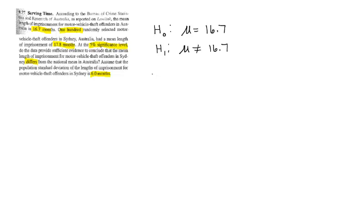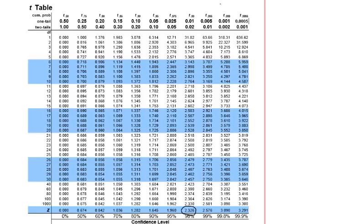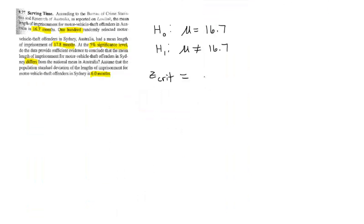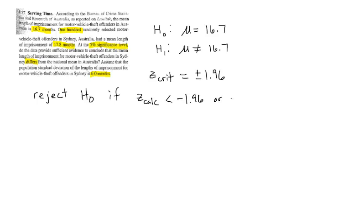Now we want to find our critical value. Because we know sigma, we are using Z, so Z-crit is equal to — we go to our Z table with a two-tailed test at 5% significance, cross to 0.05 and down to Z, giving us 1.960. Because we are two-tailed, we are going to need to use plus and minus 1.96. That means we reject H0 if Z-calc is less than negative 1.96, or if Z-calc is greater than 1.96.